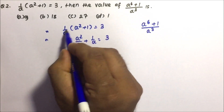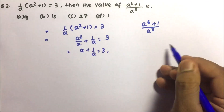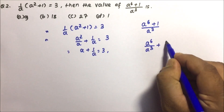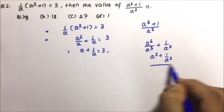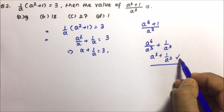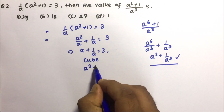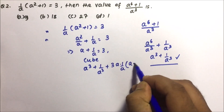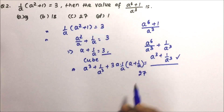If you divide a⁶ plus 1 by a cube, then a⁶ by a cube plus 1 by a cube gives a cube plus 1 by a cube — the power reduces by 3. So basically we need to calculate a cube plus 1 by a cube. Take cube on both sides: a cube plus 1 by a cube plus 3 times a times 1/a times (a plus 1/a) equals 3 cube, which is 27.